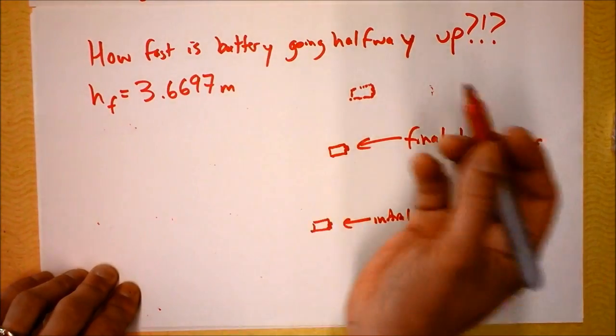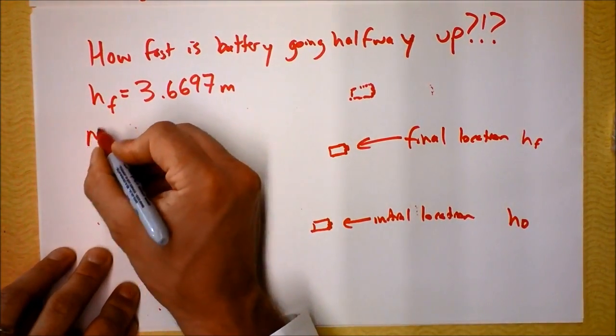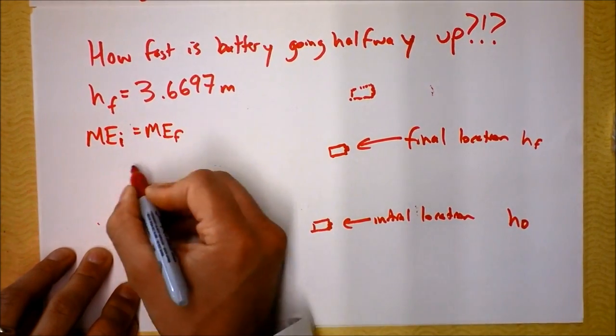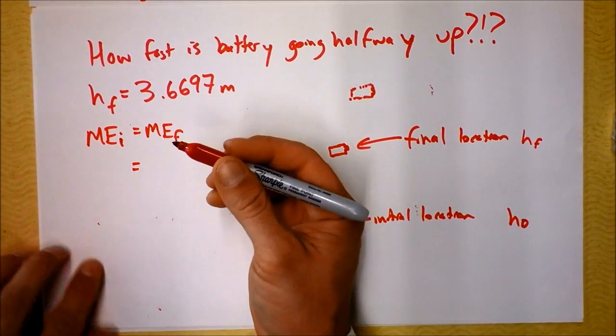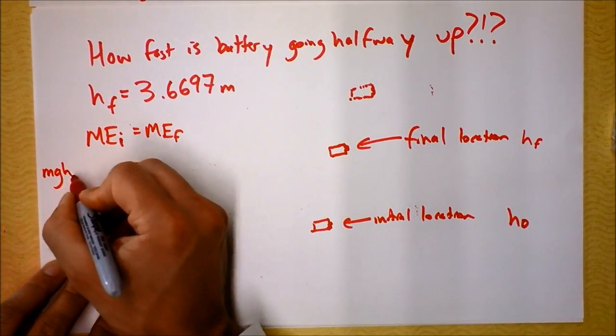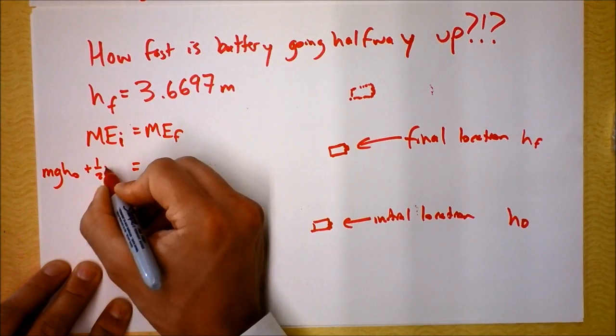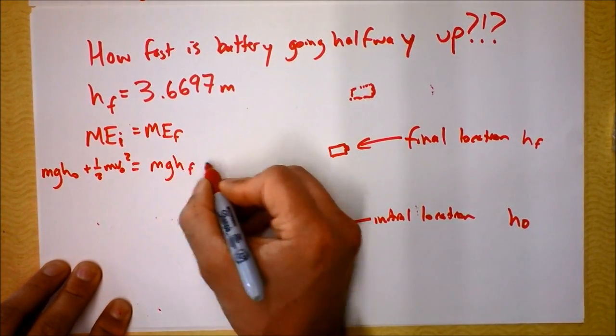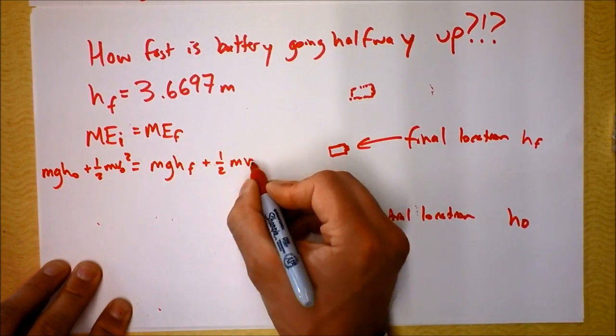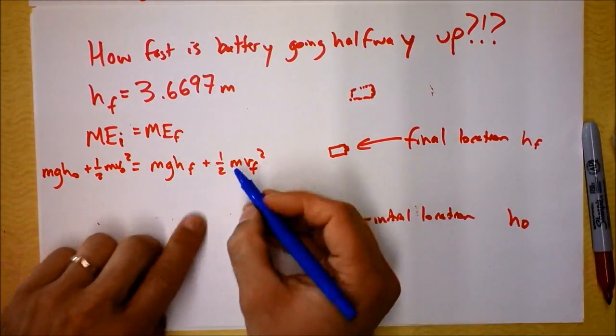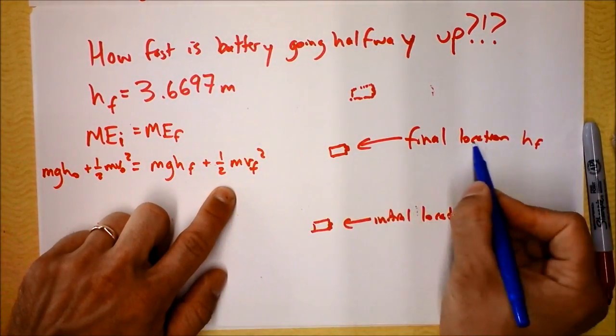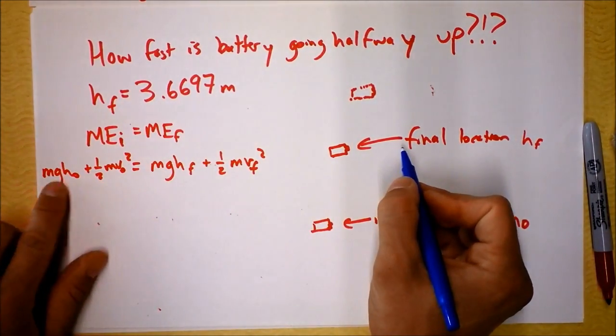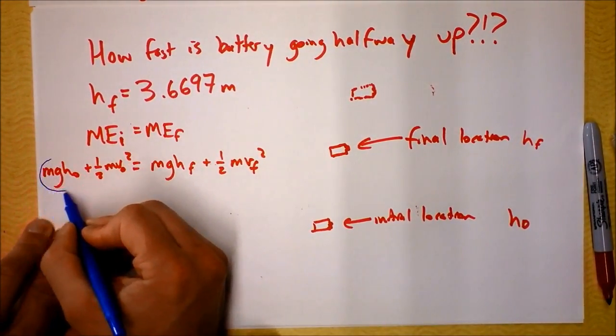We've got H naught here and Hf here, and we know H naught and Hf and we also know V naught. We're going to say MEi is MEf. So we've got M times G times H naught plus one-half M V naught squared equals M times G times H final plus one-half M times V final squared. Is the final velocity zero again? Nope, still going up, so we're going to need to keep this. Also the final height is not zero, but the initial height is zero.